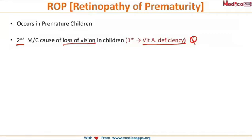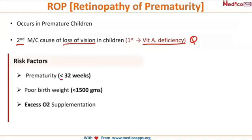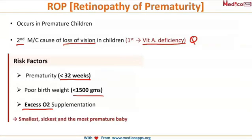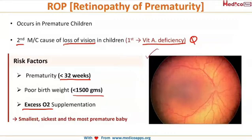The risk factors which predispose a baby to ROP are: gestational age of 32 weeks or less when born, birth weight less than 1500 grams making it a very low birth weight baby, and the third and most important risk factor is excess oxygen supplementation — this is the main reason behind the pathogenesis of ROP. An easy line to remember is that the smallest, sickest, and most premature baby is predisposed to ROP.